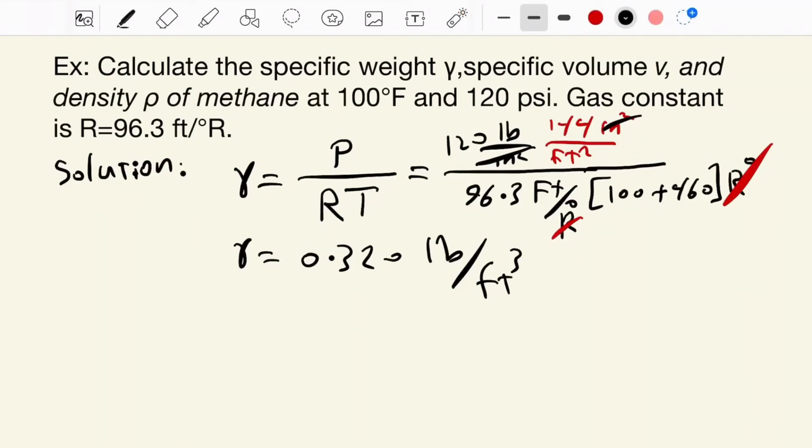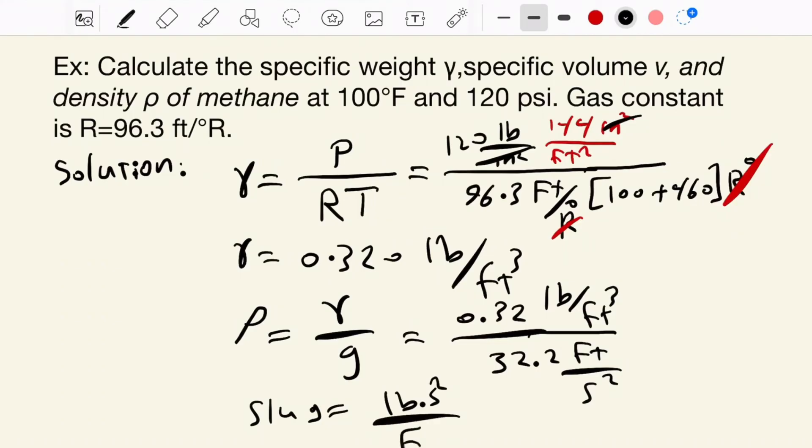Also, density, which is rho, equals gamma over G. Gamma equals 0.32 pounds per foot cubic. G in British system is 32.2 foot per second square. We know that slug equals pound second square over foot. So, the result becomes 0.00994 slug per foot cube.